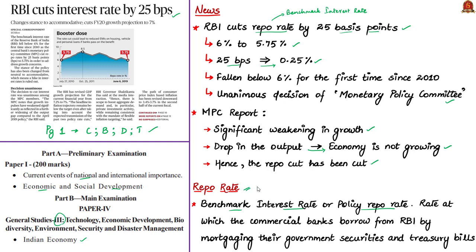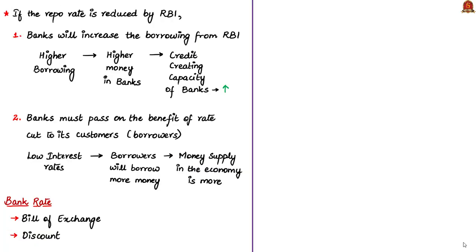Repo rate is the rate at which commercial banks borrow from the Reserve Bank of India — the Central Bank — by mortgaging their government securities and Treasury bills. If the repo rate is reduced by RBI, the banks have two options. First, the banks will increase their borrowing from RBI since the rates have become low. If the banks borrow higher amounts from RBI, their credit-creating capacity will increase since they have more money.